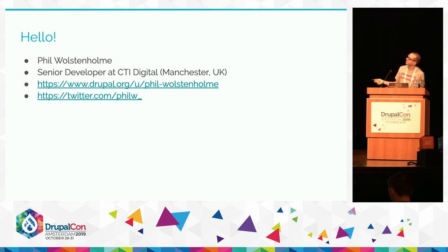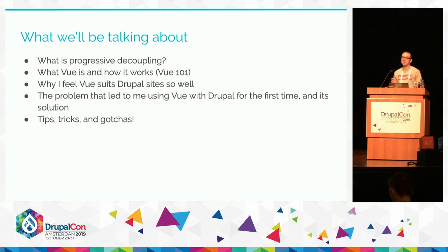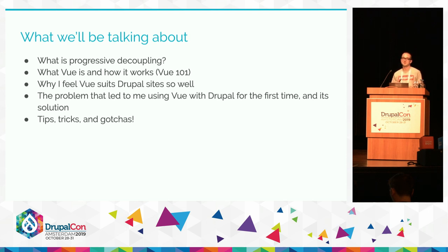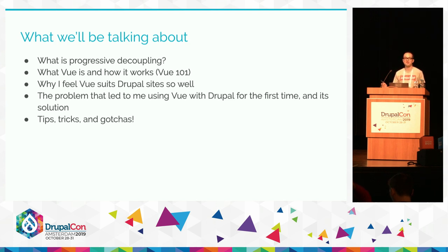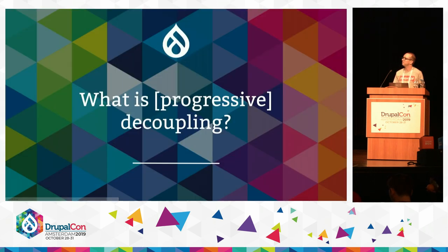You can find me on drupal.org as phil-Walsenholm and on Twitter as philw_. We've got quite a lot to talk about — I was quite ambitious in my talk abstract, possibly overly ambitious. So if we run out of time, come find me at lunch or talk to me on Twitter. We're going to cover what progressive decoupling is, what Vue is in the context of front end UI frameworks, why Vue and Drupal are good partners, a case study, and some tips.